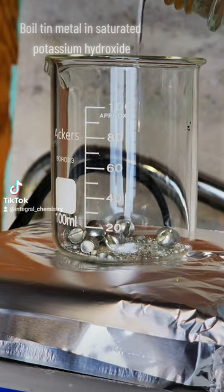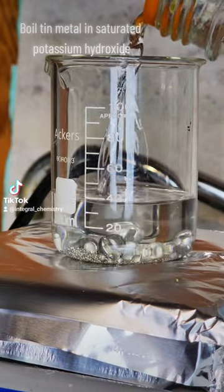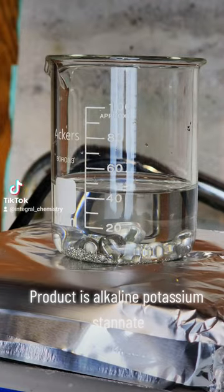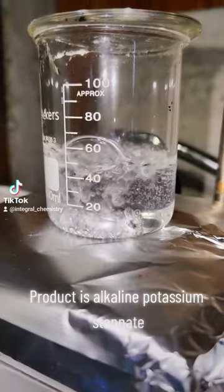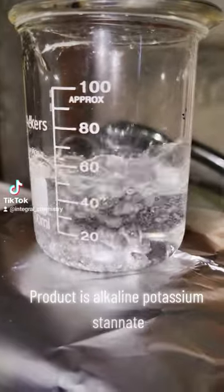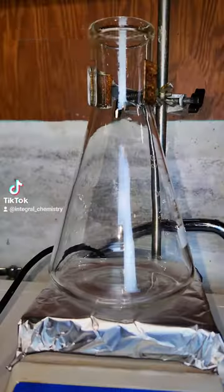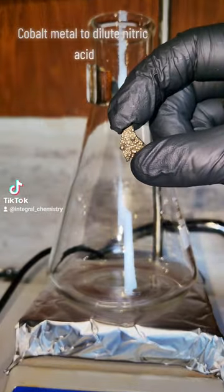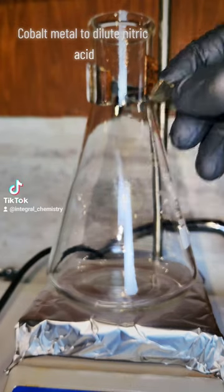To begin the synthesis, I need to make potassium stanate by boiling tin metal in a saturated potassium hydroxide solution. Technically, sodium hydroxide might be able to work as well, but the formula I found used potassium hydroxide.